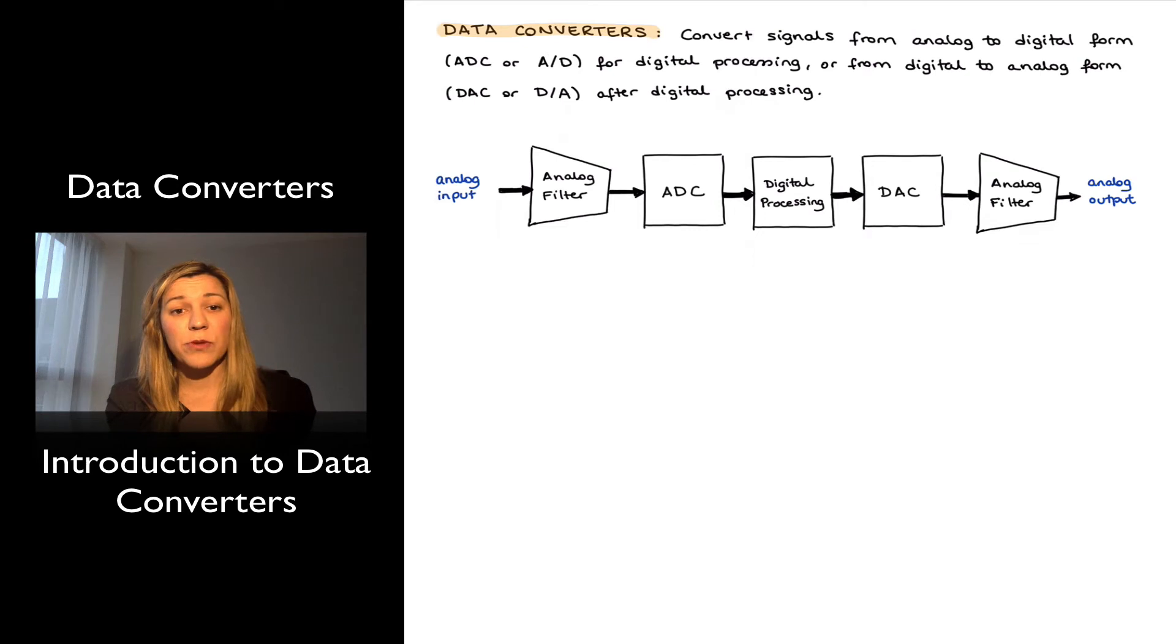Now, once the signal has been processed by the digital system, sometimes it is required to bring the signal back into the analog domain. That operation is referred to as digital to analog conversion and performed by a circuit known as a digital to analog converter, or a D to A converter, or just simply a DAC or DAC.